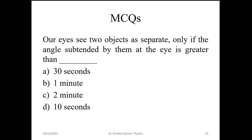Our eyes see two objects as separated only if the angle subtended by them at the eye is greater than what value? The options are 30 seconds, 1 minute, 2 minutes, or 10 seconds. The answer is 1 minute. If two objects subtend an angle of 1 minute at our eye, we can distinguish them. If the angle is less than 1 minute, we see them as one object. So 1 minute is the correct option.